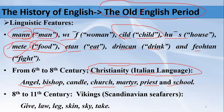The words added to English due to the influence of Christianity from Latin include: angel, bishop, candle, church, martyr, priest, and school. If you look at these words, all of them are religious in nature — they all belong to the terminology of Christianity. So Christianity's influence contributed to Old English.